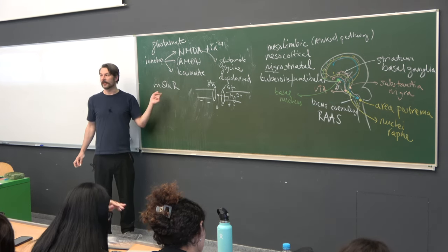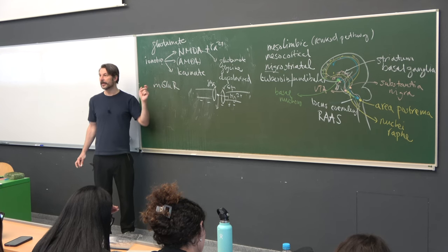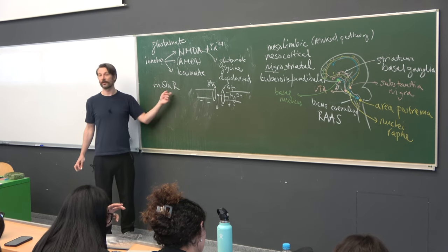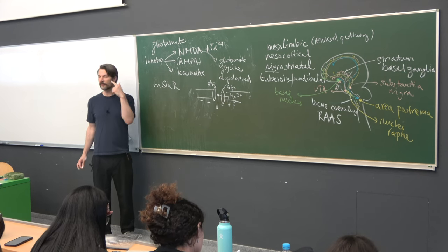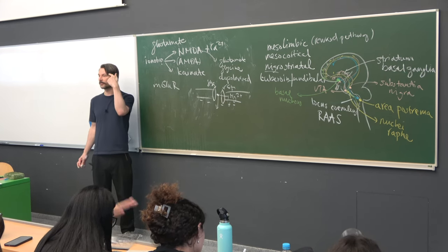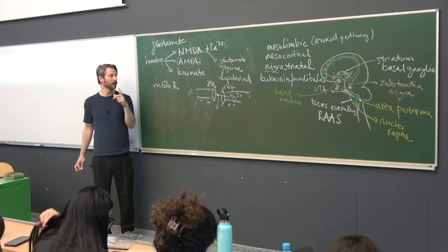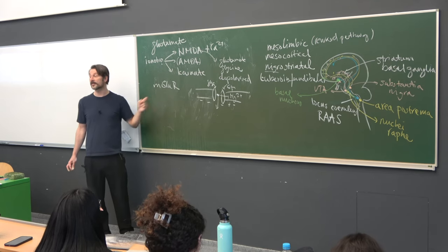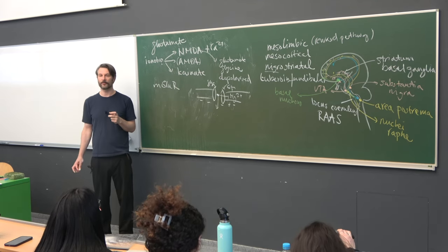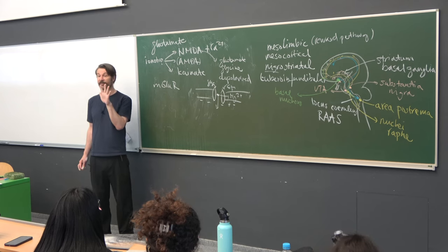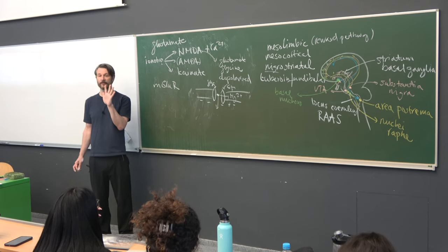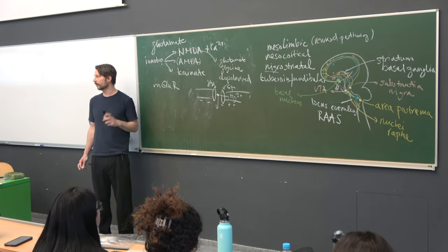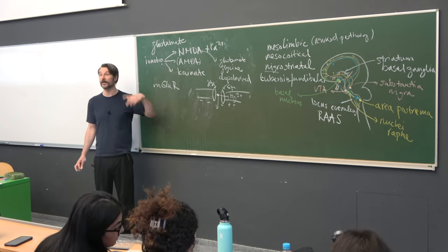One thing to say about metabotropic glutamate receptors: next year, when we talk about senses, several of them will come up. Some are in the retina with very important functions. And some are on our tongues — one subtype of metabotropic glutamatergic receptor detects the fifth taste, umami, which is the taste of glutamate.